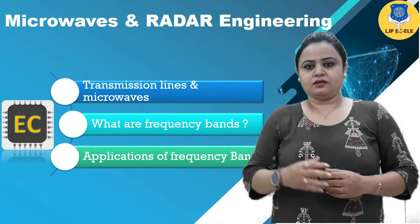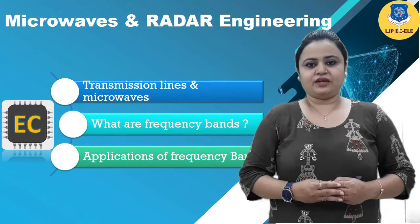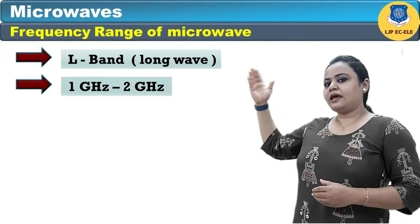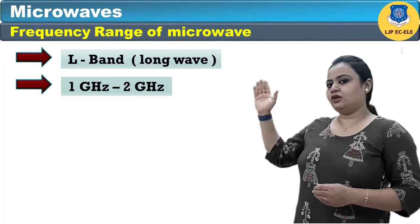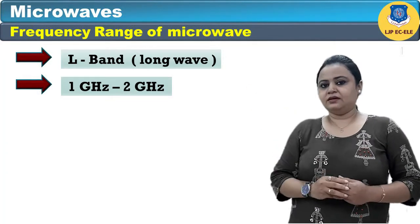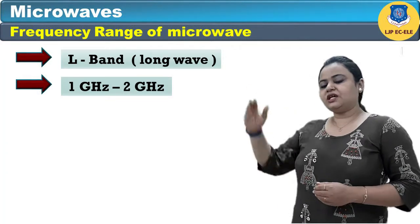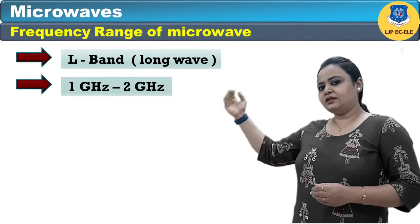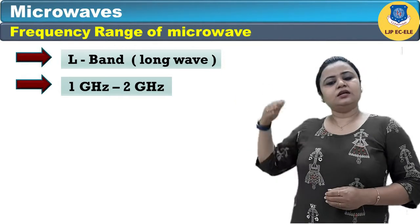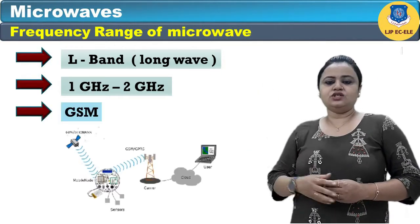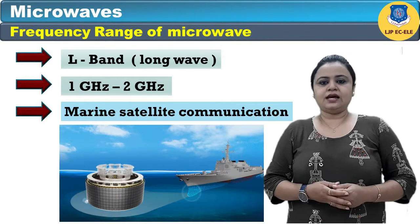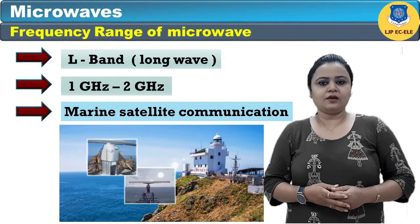The L band, which is the long wave band, ranges from 1 GHz to 2 GHz. It is used in GSM, marine satellite, and communications.